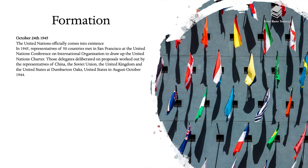During the Second World War, representatives of 26 nations pledged their governments to continue fighting together against the Axis powers. The Second World War's demands on governmental policy delayed the United Nations' rise to power as a governing force until peacetime began in 1945. On October 24th 1945, the United Nations officially came into existence. Representatives of 50 countries met in San Francisco at the UN Conference on International Organization to draw up the UN Charter, based on proposals worked out by representatives of China, the Soviet Union, the United Kingdom, and the United States between August and October 1944.